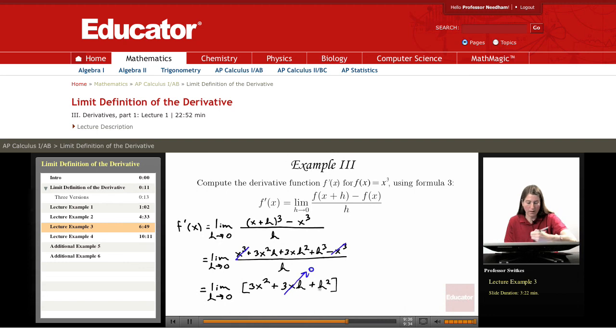And h squared heads towards 0. And we are left with just the limit as h approaches 0 of 3 x squared plus a couple of zeros in the limit, and we get 3 x squared.